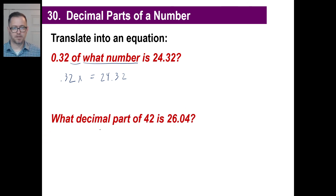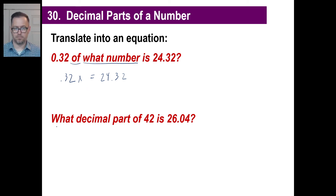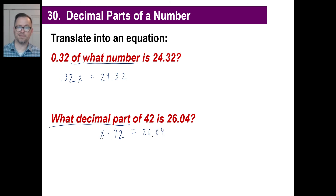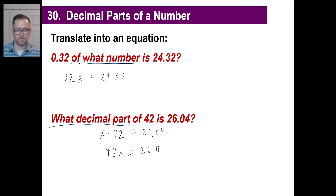'What decimal part of 42 is 26.04?' Anytime they say 'what decimal part' or 'what number,' that's X. X of 42 means times 42, so X · 42 = 26.04. Usually we write it as 42X = 26.04, then divide by 42 and do long division to find the answer.